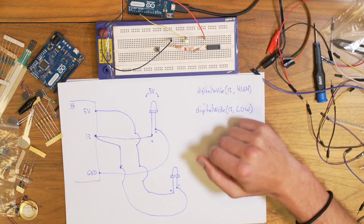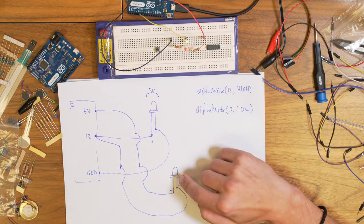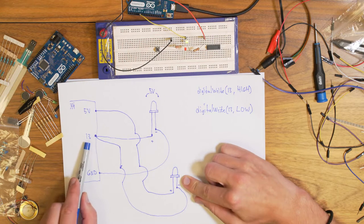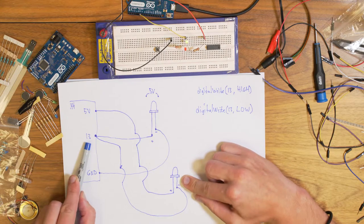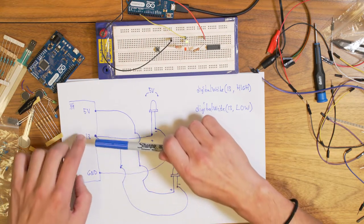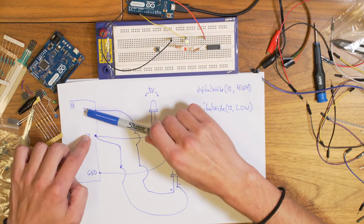And I take this one from here to pin 13. Then it will blink the other way around. So the LED will light up when we put pin 13 to low. Because when this one goes low, there will be zero volts here and five volts here.